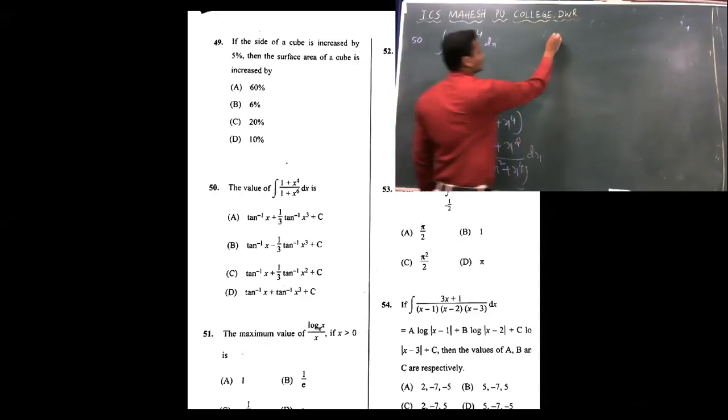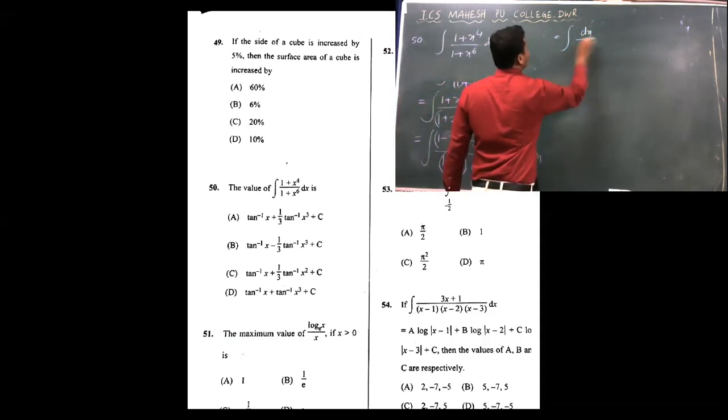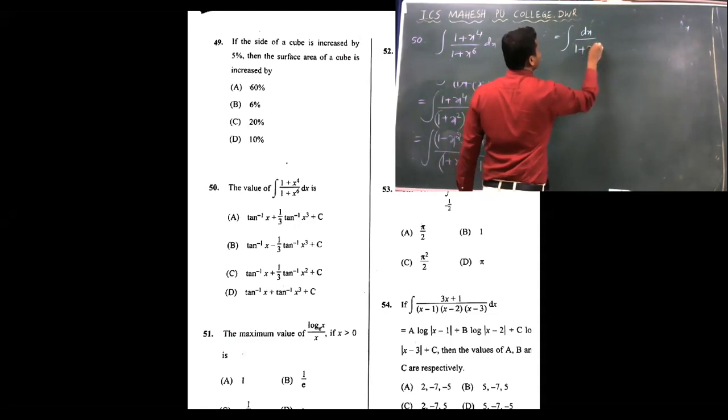So next step, separate the terms. You get integration of (1 minus x² plus x⁴) upon (1 plus x²) into 1 minus x² plus x⁴. The value becomes 1 minus x² plus x⁴. These two terms cancel. You get 1 upon (1 plus x²) plus x² upon (1 plus x²) into (1 minus x² plus x⁴), remaining term.